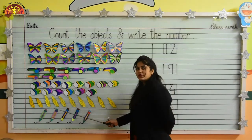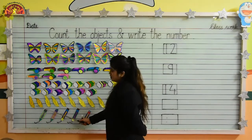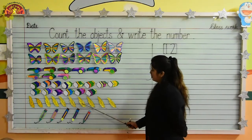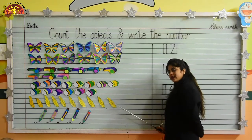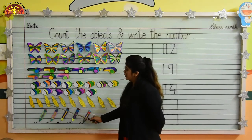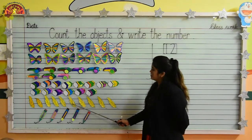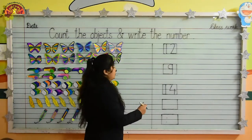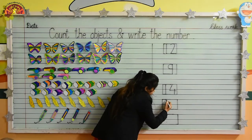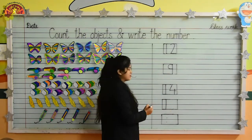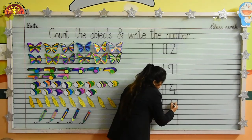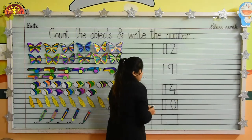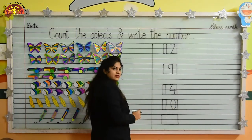Kids, look over here. How many feathers are there? Let's count with me: 1, 2, 3, 4, 5, 6, 7, 8, 9, and 10. Again: 1, 2, 3, 4, 5, 6, 7, 8, 9, 10. Now we will write 10. Put your crayon here, make a standing line like this. Now put your crayon here, make a curve, go down, come upward, make another curve like this. 1, 0 — 10.